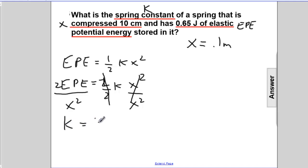So K will be 2 times the EPE divided by X squared. So 2 times the EPE are 0.65 joules. I'm going to express these as Newton meters because Newton meters are joules. Divided by 0.1 squared.